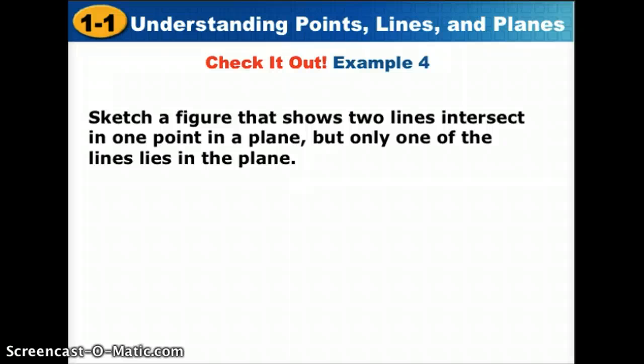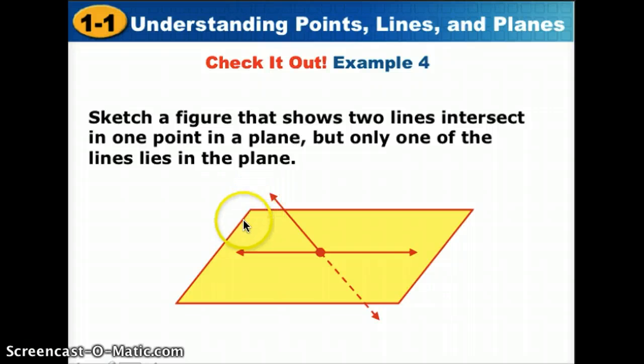Last one, sketch a figure that shows two lines intersecting in one point in a plane, but only one of the lines lies in the plane. Our planes always look the same. We use a parallelogram. To show that one line is in the plane, we draw all of it inside the parallelogram. They have to intersect at one point, and one of the lines cannot lie in the plane. Like we said before, use a dotted line to show that it's beneath the plane, and show that this one is above the plane by making it solid. Also notice that the two arrows are both outside the plane to show that that line itself is not actually contained in the plane.